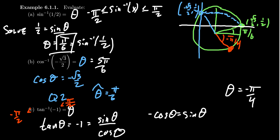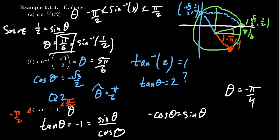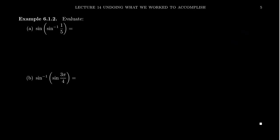On the other hand, if you had to compute something like arctangent of 2, that's much harder — when is tan(θ) = 2? That's not something we know just from memorizing the unit circle, so it would require some type of numerical calculation.